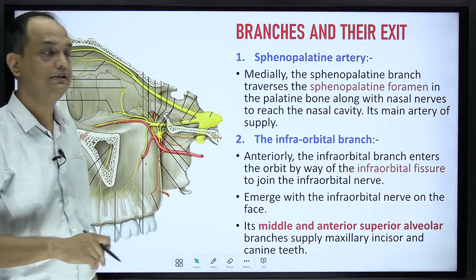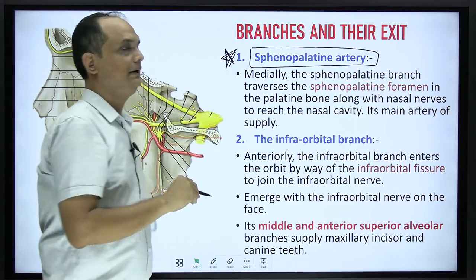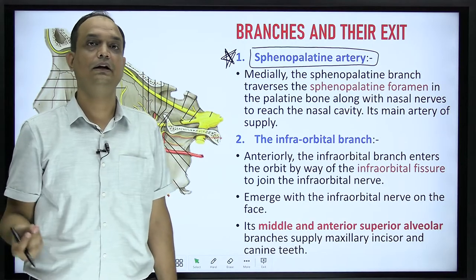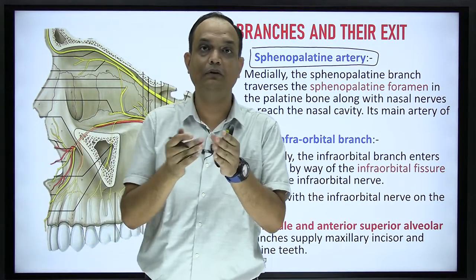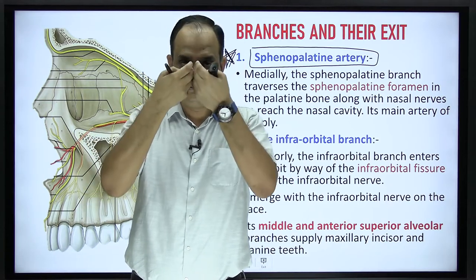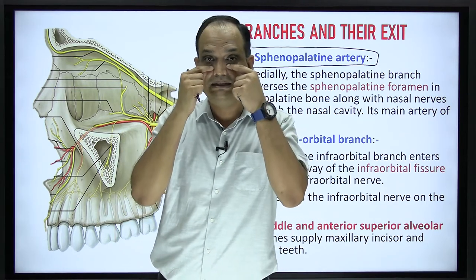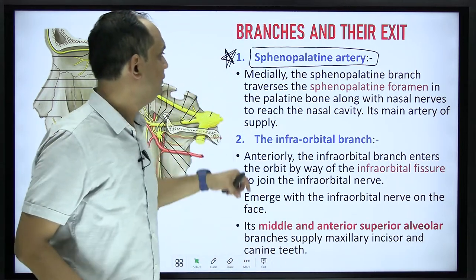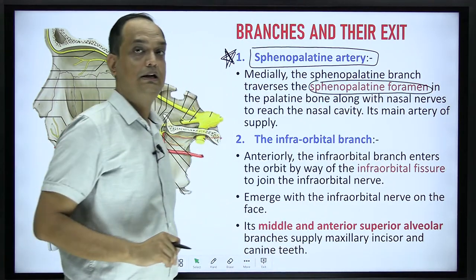The first branch is the sphenopalatine artery. The sphenopalatine artery is the terminal continuation of the third part and it enters through the sphenopalatine foramen, which is present in the medial wall. Both sides the artery enters medially and enters into the nasal cavity. When you do the dissection of the nose and open the lateral wall, you are able to see the entry of the sphenopalatine artery from the posterior side. It enters through the sphenopalatine foramen and goes to supply the nasal cavity.